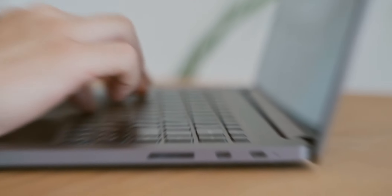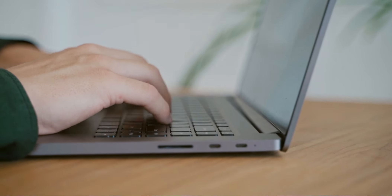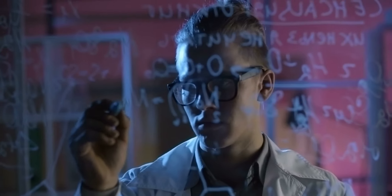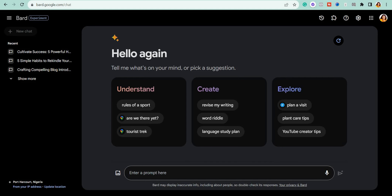Let's go to Google Bard and I'll show you how to use it. If you already have a Google account, you can access Google Bard. If you don't have one, you'll need to create one. To use Google Bard, just go to bard.google.com and you will automatically be logged in. This is the interface of Google Bard and it's very easy to use.